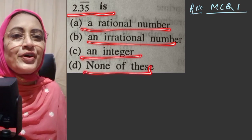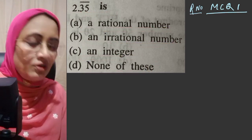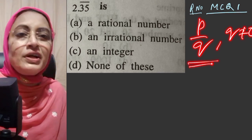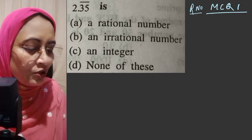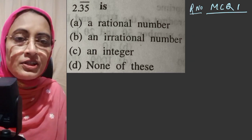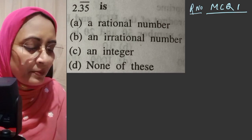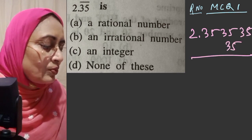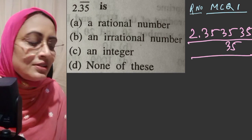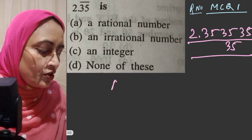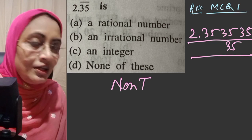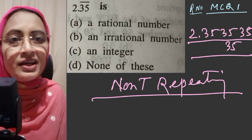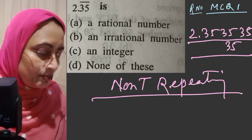We know the basic definition of a rational number: p by q, where p and q are integers and q is not equal to zero. Now 2.35 bar means 2.3535... repeating. What type of decimal expansion is this? It is non-terminating and repeating. According to the definition, non-terminating repeating decimals are rational numbers.